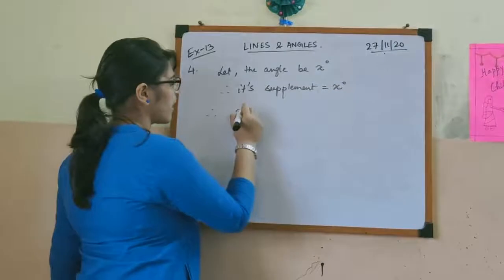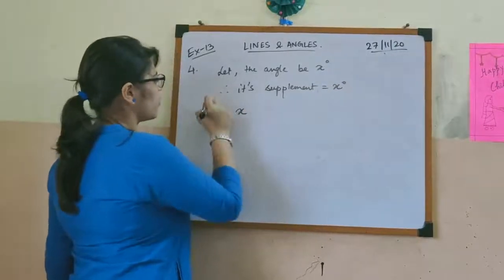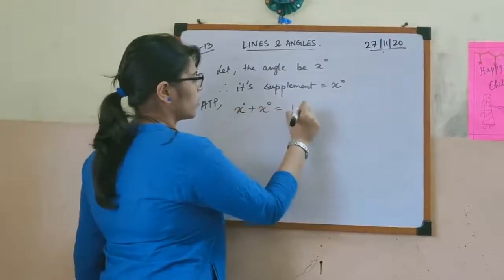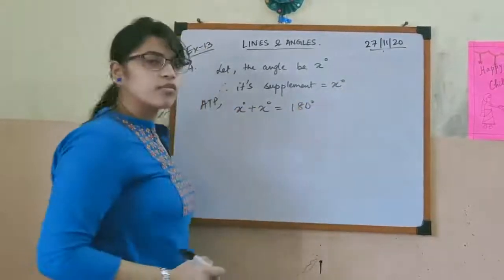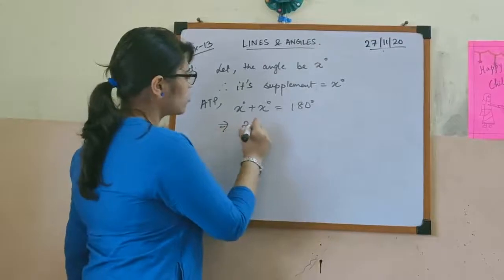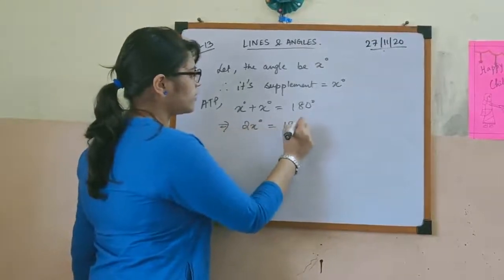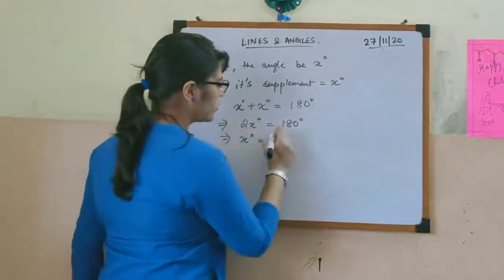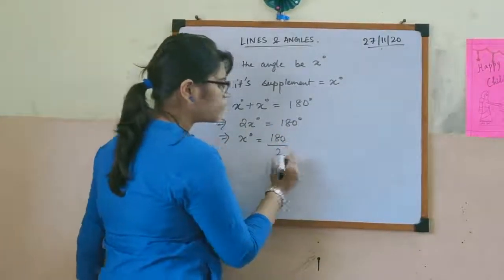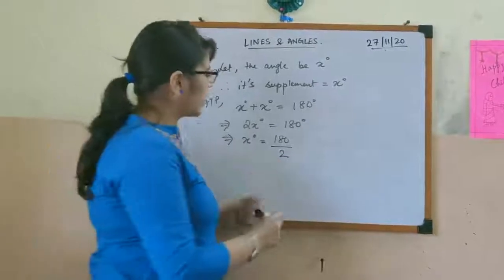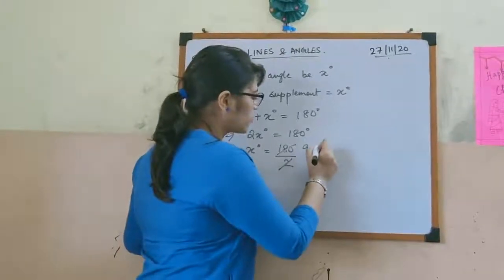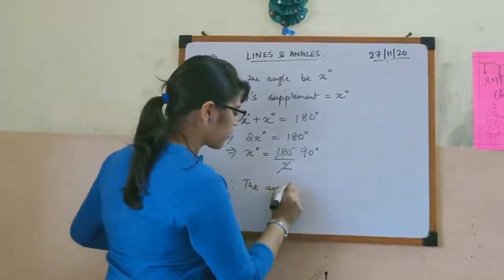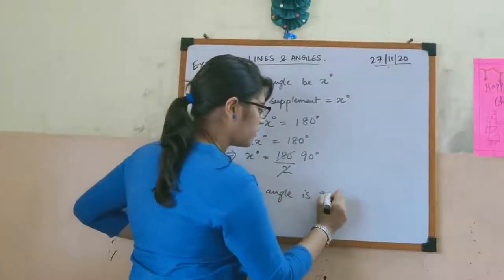Supplementary means both angles add up to 180 degrees. So according to the problem, x plus x equals 180 degrees, which gives 2x equals 180. Dividing both sides by 2 gives us 90 degrees. Therefore, the angle is 90 degrees.